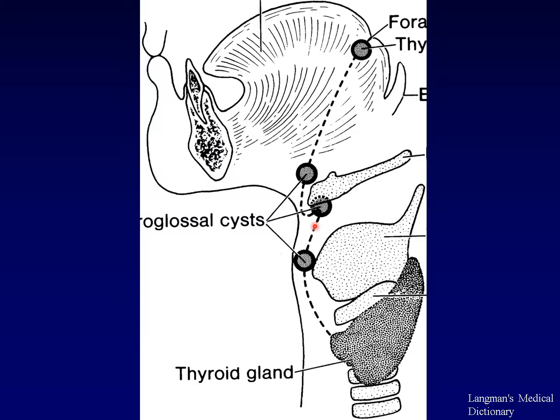If you want to make the diagnosis of thyroglossal duct cysts, make sure that it is along this embryologic path, because that's the only place you can find them. Once you get below the hyoid bone, the thyroglossal duct cyst runs right in the strap muscles, and that close relationship between the strap muscles and the thyroglossal remnant allows us to make a specific diagnosis.